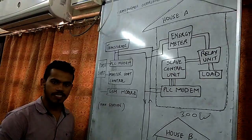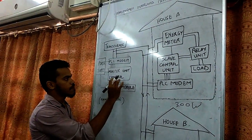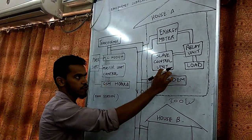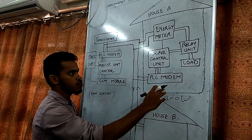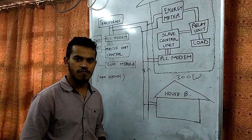You will be getting three messages. The third message will be the last message. And when the third message is sent, the master unit will send a command to slave unit to cut the power supply. Let's have a live demonstration of our project.